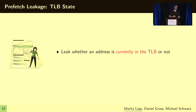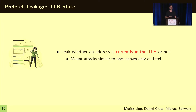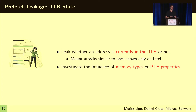Furthermore, we can leak whether an address is cached in the TLB or not, allowing us to mount attacks that have previously been demonstrated only on Intel CPUs, by using the prefetch instruction as a primitive. We can also investigate the influence of different memory types — whether an address is uncacheable or not — or other page table entry properties. Details are in the paper.